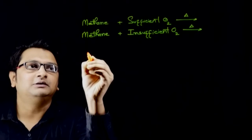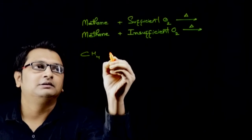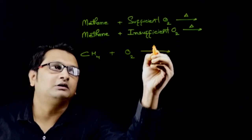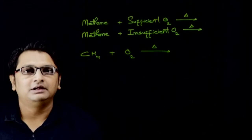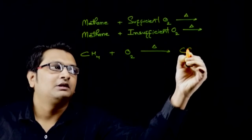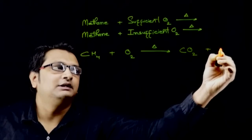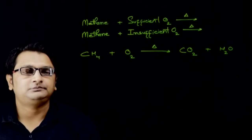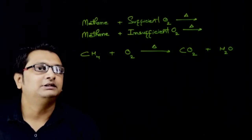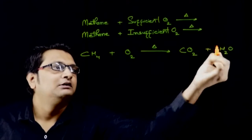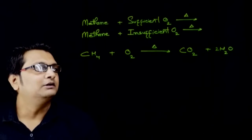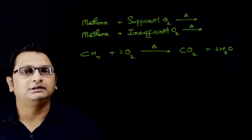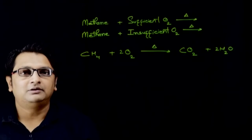First of all, when methane burns in sufficient amount of oxygen, it forms carbon dioxide gas and due to temperature, water vapour is formed. Now, to balance it, we will put two here and two here and the reaction will be balanced.